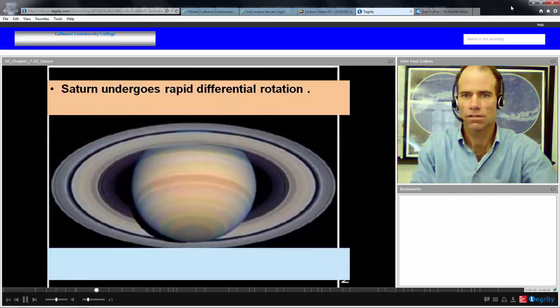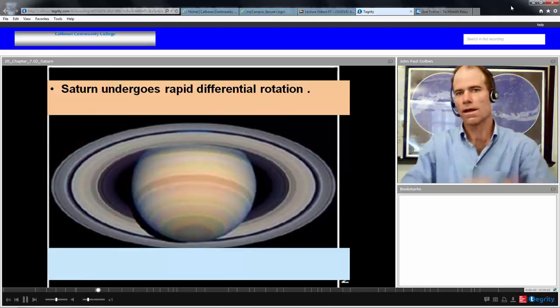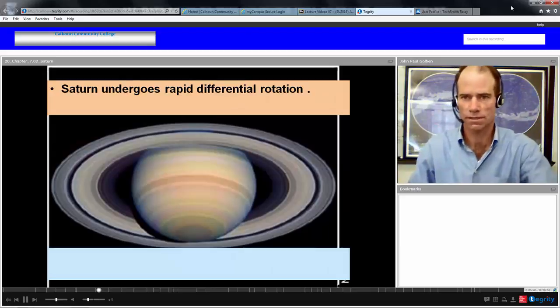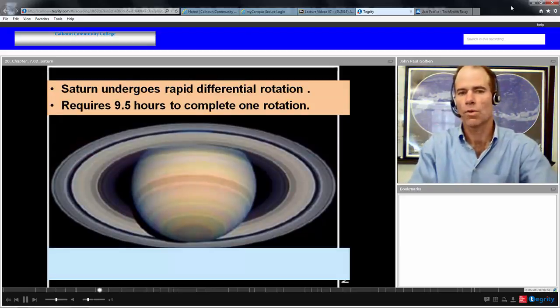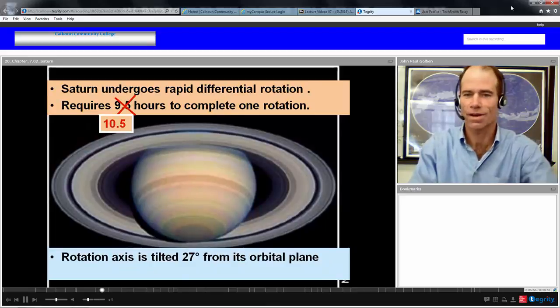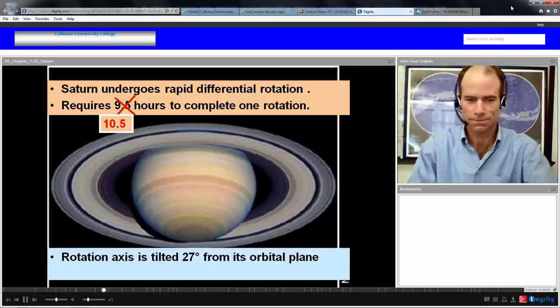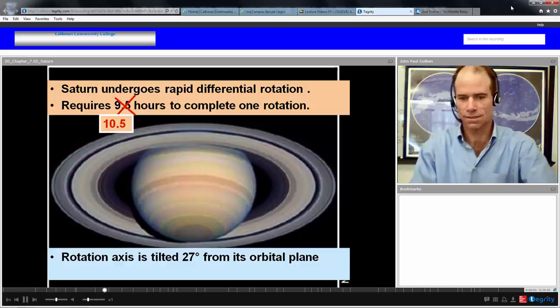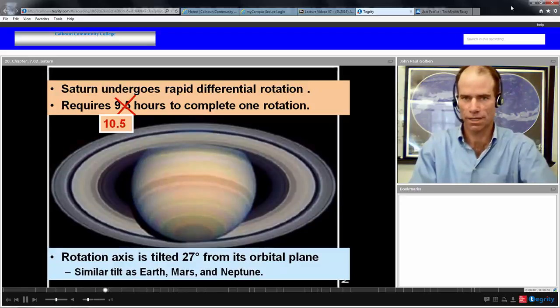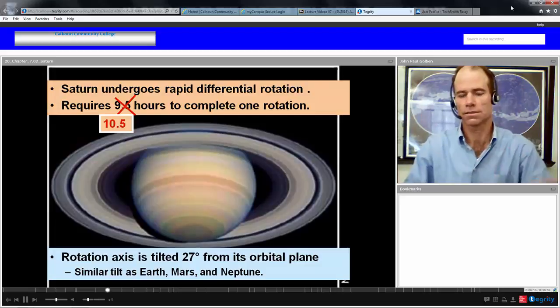Saturn undergoes rapid differential rotation, which means not all parts of its atmosphere rotate at the same rate. It requires 10.5 hours to complete one rotation—that didn't quite fit into the 9.5 zone, but it's pretty close. The rotation axis is tilted 27 degrees from its orbital plane, similar tilt to Earth, Mars, and Neptune. We have four planets within about 3 degrees of tilt of each other.